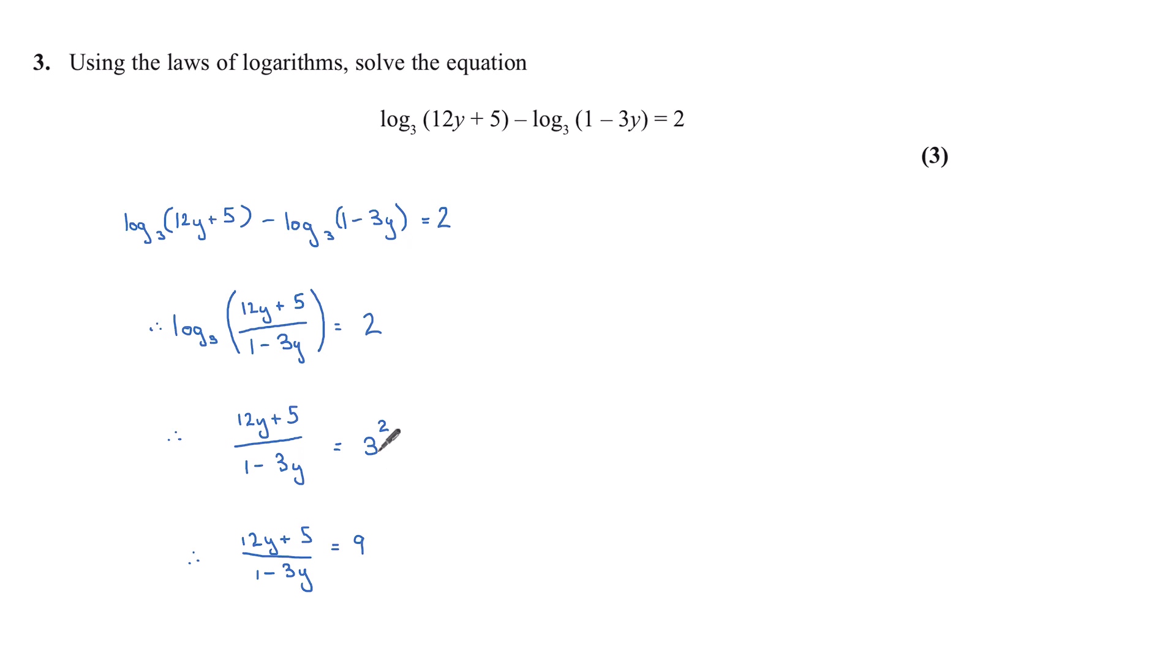This of course is equal to 9. Now if we multiply both sides by 1 minus 3y, this gives me 12y plus 5 is equal to 9 minus 27y. Now let's add 27y to both sides and subtract 5. So that gives me 39y is equal to 4.